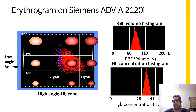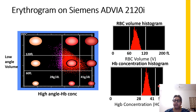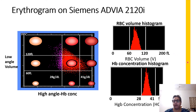This corroborates with the histograms that are also generated, where you have a volume histogram. This is the normal volume, which means that the patient will have a normal MCV. This histogram can either shift to the left or the right. Similarly, based upon the hemoglobin concentration, this is the normal one, and it can shift to the left or the right. This is what we are going to base our interpretation of the erythrograms on in the next few examples.